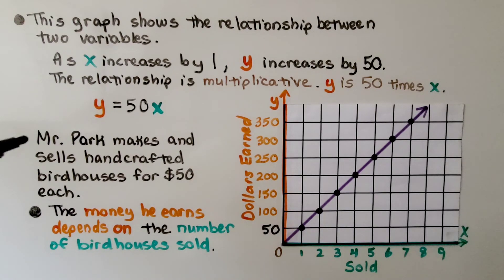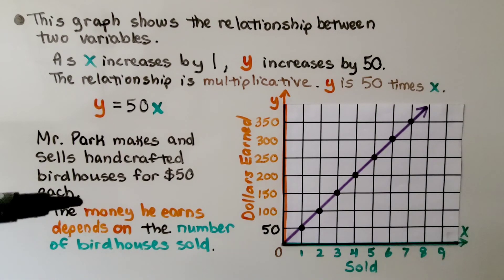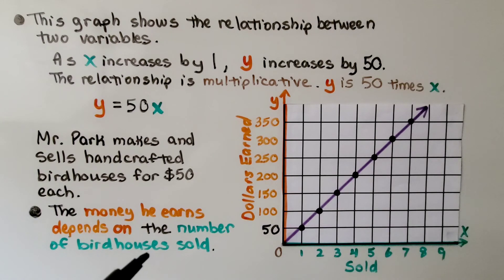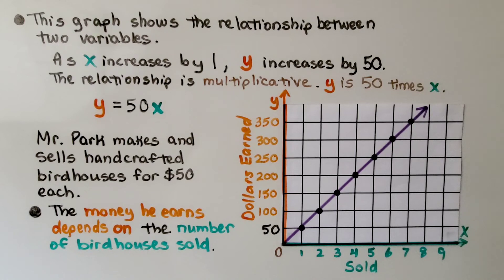Mr. Park makes handcrafted birdhouses for $50 each. How much has he earned? The money he earns depends on the number of birdhouses he sold. Here is the dependent variable because it depends on. And here is the independent. It depends on the number of birdhouses sold. Our equation is y is equal to 50x. Y is 50 times whatever x is.